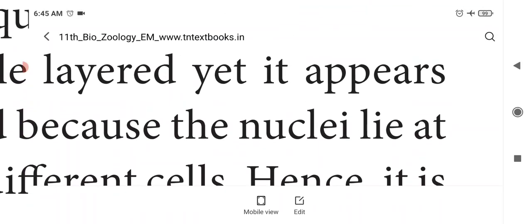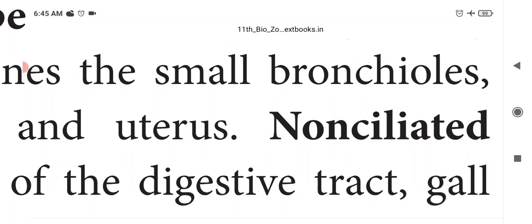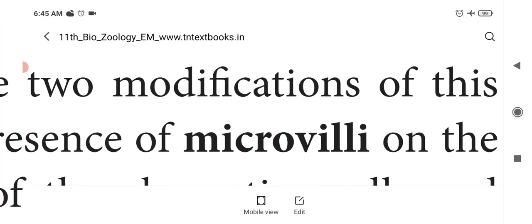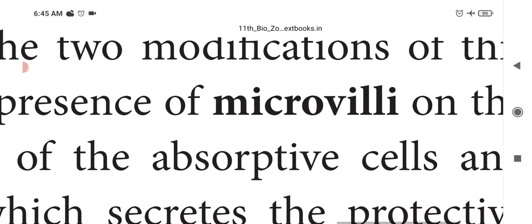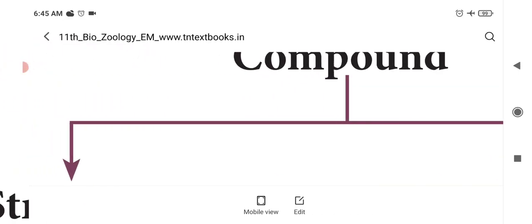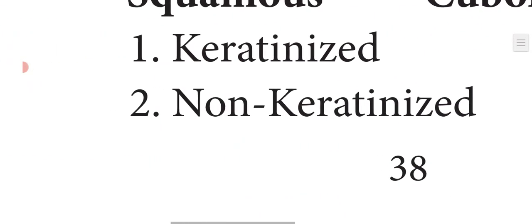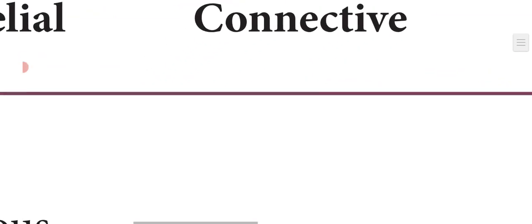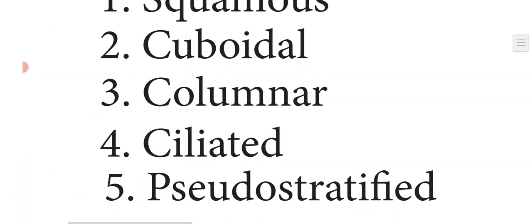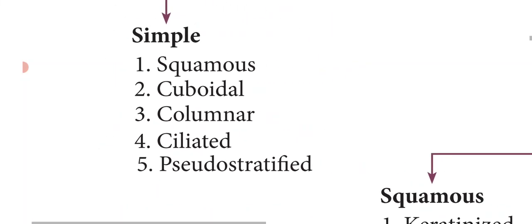In this chapter we have first covered epithelial tissues, including the two broad categories — simple epithelium and compound epithelium. Simple epithelium is further classified into squamous, cuboidal, columnar, ciliated, and pseudo-stratified types. Thank you.